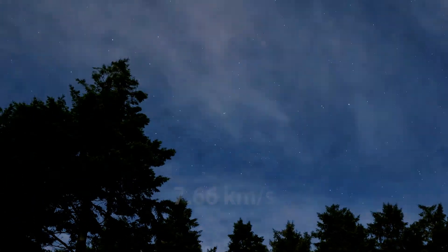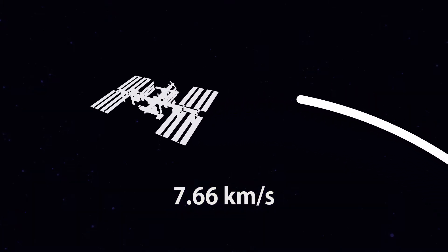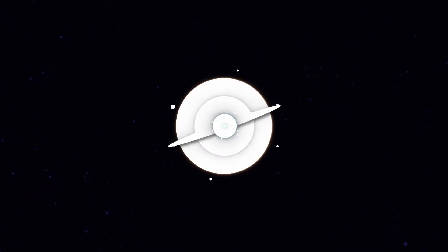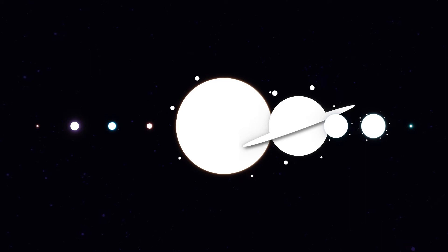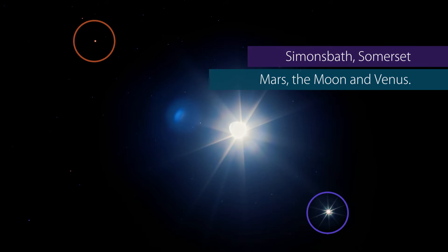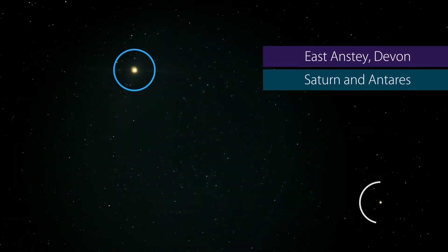From Exmoor we can see the International Space Station come overhead. We can see planets in the sky: Venus really very brightly, Mars in the sky as well, Jupiter is the second brightest planet in the sky that we can see, and we can also see Saturn as well.